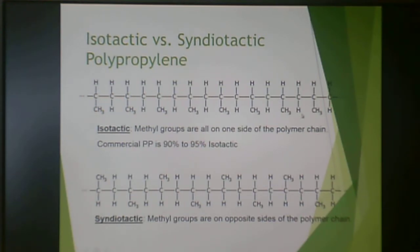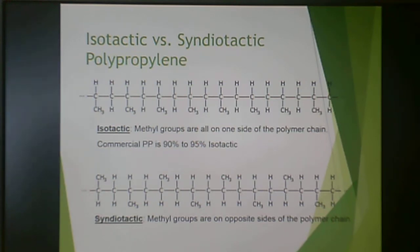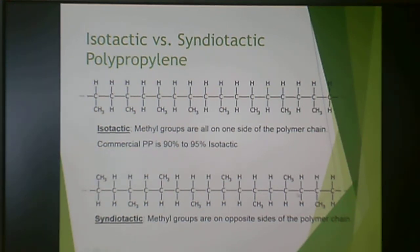With isotactic polypropylene, one side is all hydrogens and the other side is all methyl groups — all on one side of the polymer chain. For commercial polypropylene, this is an advantageous arrangement: 90 to 95% of commercial polypropylene is isotactic, and that's why they use the catalyst they use. Syndiotactic has the methyl groups alternating sides of the chain.